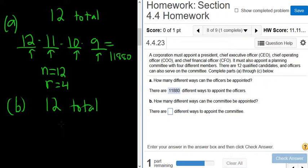Now, committee members are just committee members. They don't have special titles, so the order does not matter. So this will be a combinations problem. So n is 12, and r is 4. Remember, the notation was n choose r. You have n objects, and you're choosing r of them. So n is 12, and r is 4.